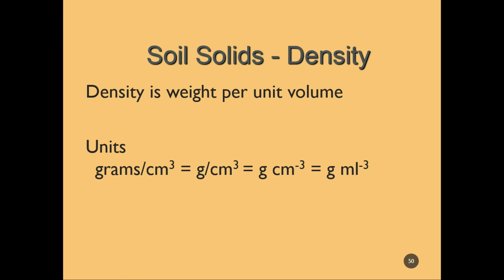Density is the weight per unit volume, expressed in grams per cubic centimeter. The nice thing about the metric system is we can switch from centimeters to milliliters — cubic centimeters is the same as a cubic milliliter.